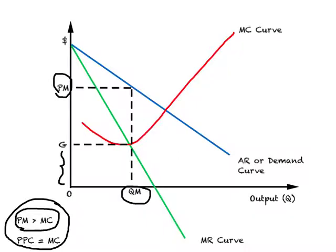Relative to perfect competition, consumers are being overcharged under a monopoly situation. The monopolist accomplishes this by restricting output — the output produced is lower than under perfect competition — allowing the monopolist to charge a price greater than marginal cost of production.